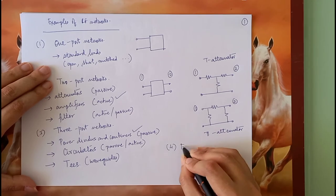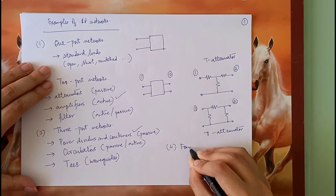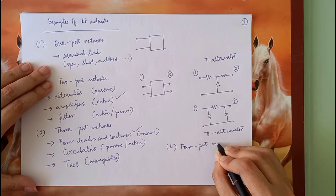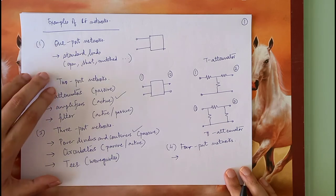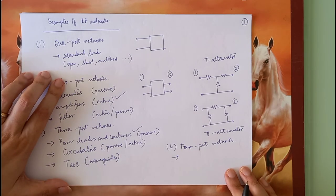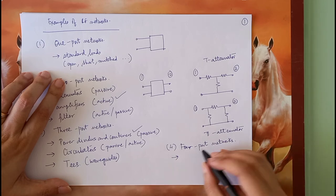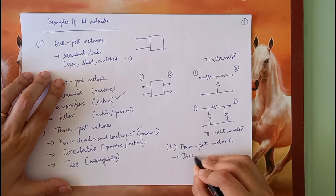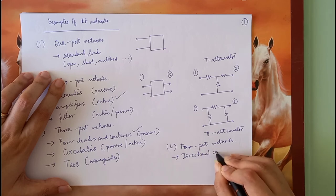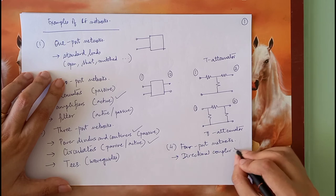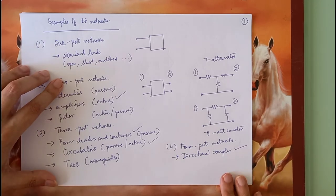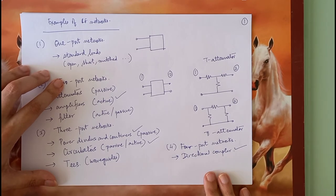Then we come to four-port networks. The simplest example of a four-port network is a directional coupler. A directional coupler does some very interesting things, which we will also take a look at. These are some of the topics we will investigate in the remaining part of the course.